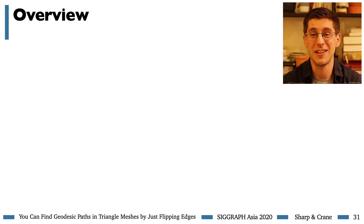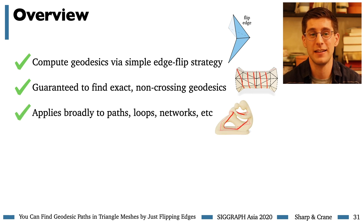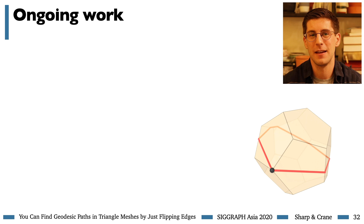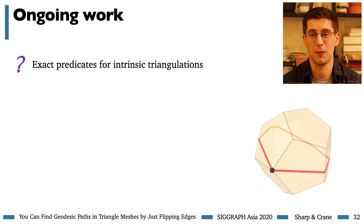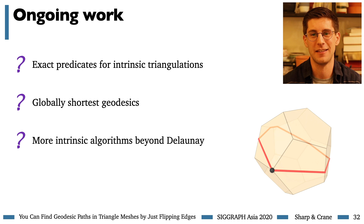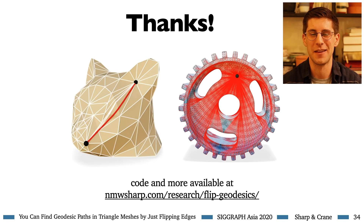Wrapping up, we saw a new algorithm for finding geodesics using edge flips. It's guaranteed to find exact, non-crossing geodesics and applies broadly to paths, loops, networks, and so on, with many applications in geometry processing. Future work includes using exact predicates for further robustness guarantees and adapting the algorithm to shortest geodesics. More broadly, we've shown it's possible to use intrinsic triangulations to lift classical geometry routines from the plane onto surfaces. This algorithm is available in several code forms, including a core implementation in Geometry Central and a demo with a GUI. Please check it out and let us know what you think. Thank you!